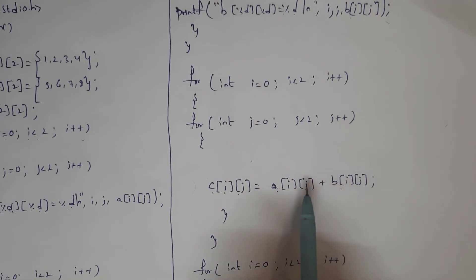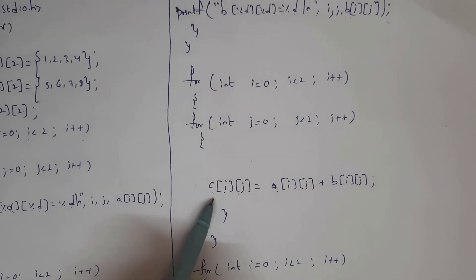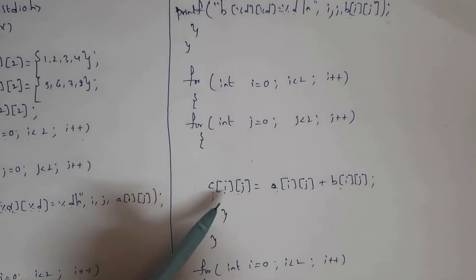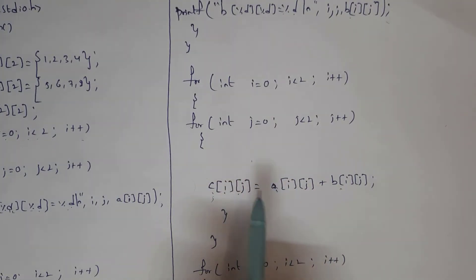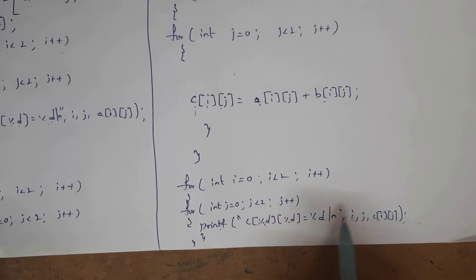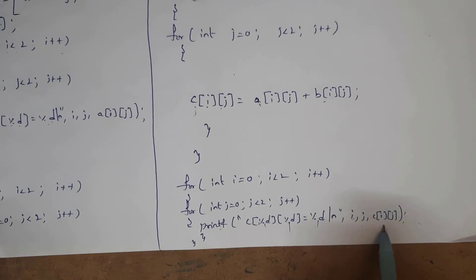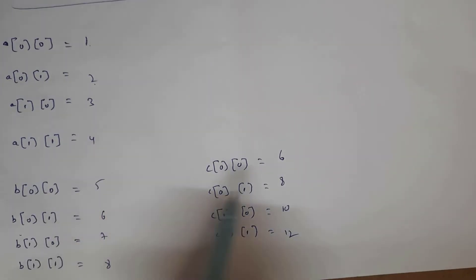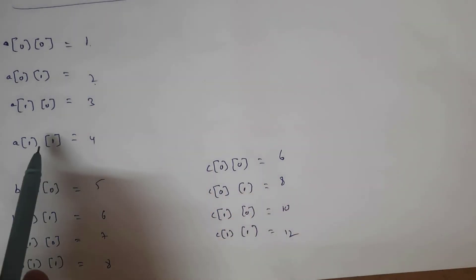Now to print matrix C, I take the same two for loops and inside I written printf: c[%d][%d] = %d, where the first %d is for row i, second %d is for column j, and third %d is for the value. By writing this code I get the addition output: 1+5=6, 2+6=8, 3+7=10, 4+8=12. This is how we perform addition of two matrices.